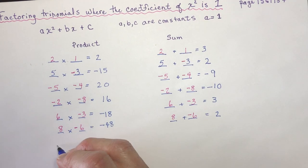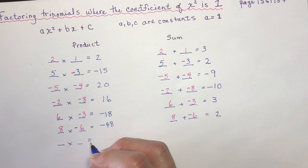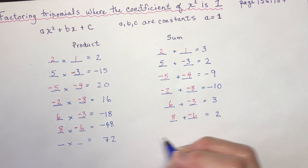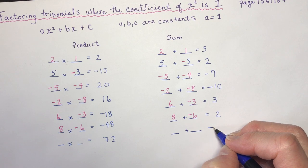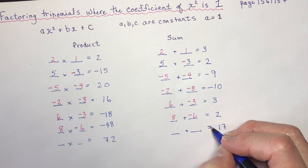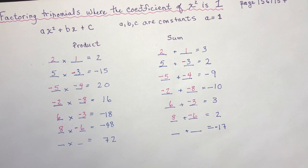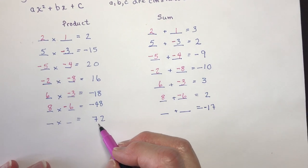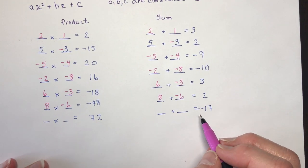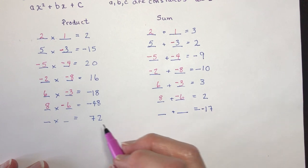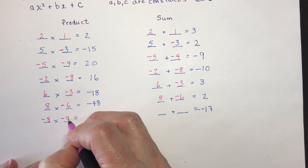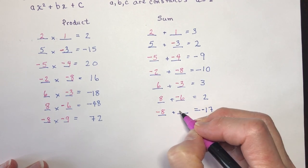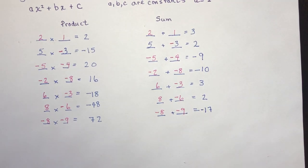Two numbers that multiply to give 72 and add to negative 17. We have a positive product but a negative sum, so both numbers must be negative. Negative 8 and negative 9 multiply to 72 and add to give negative 17.